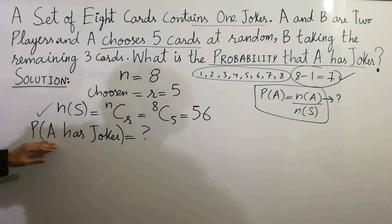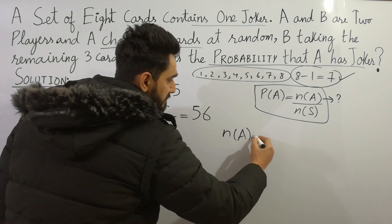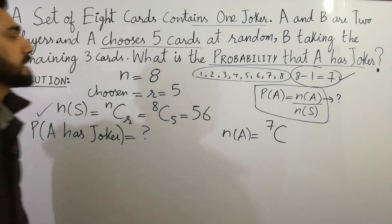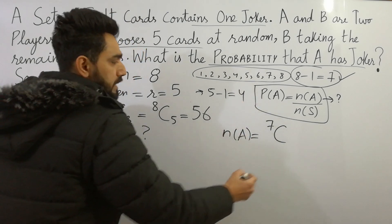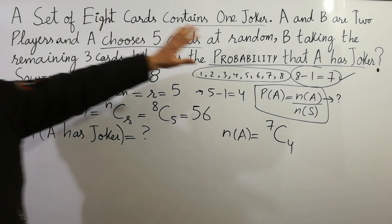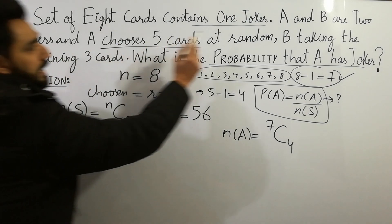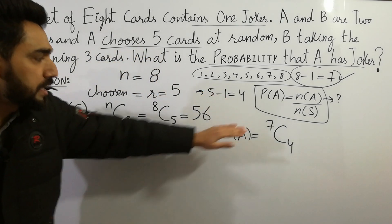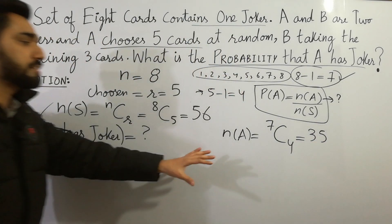A is the event that A has the joker. So number in A will be equal to (8 minus 1) C (5 minus 1), which is 7C4. The reasoning: the set of eight cards contains one joker, so eight minus one gives seven remaining cards. And A chooses five cards, so five minus one gives four. Therefore number in A equals 7C4, which is equal to 35.